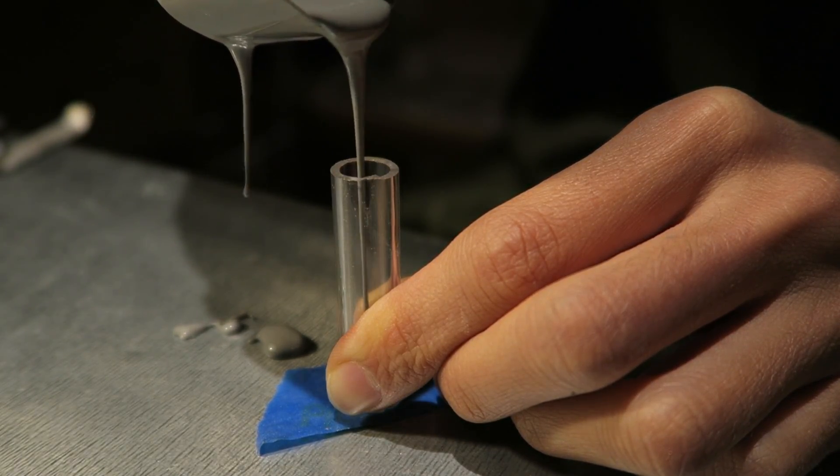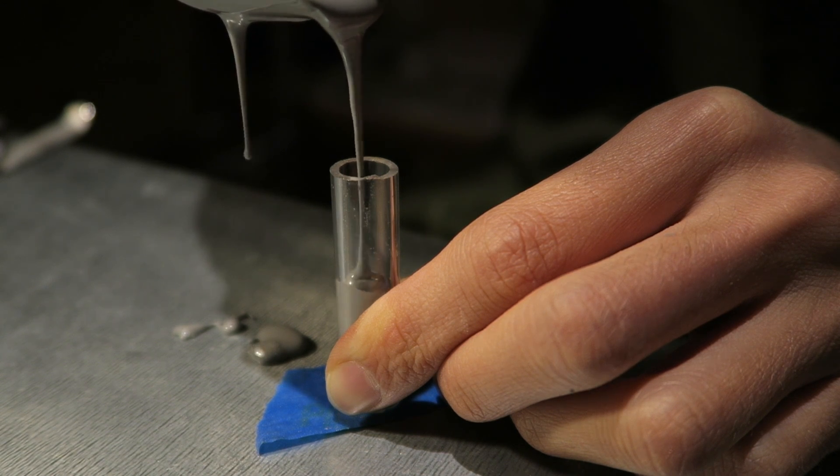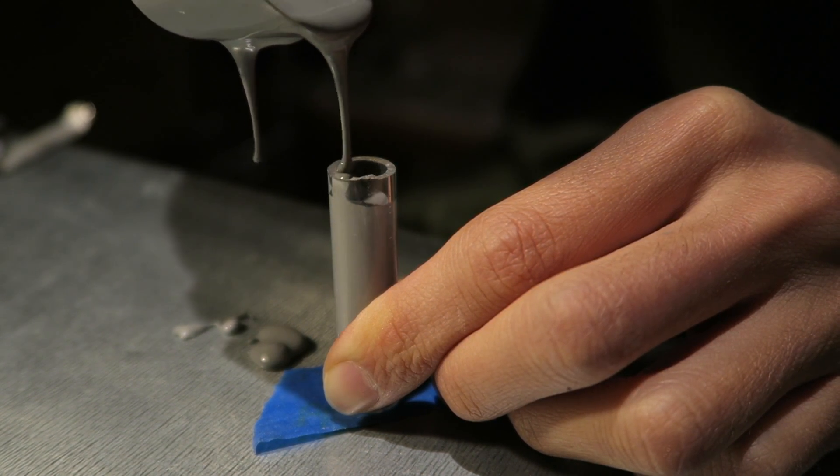Another neat trick you can do with this sculpting material is that if you heat it up enough it becomes a liquid and then you can pour it into molds for all kinds of shapes.